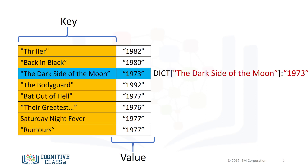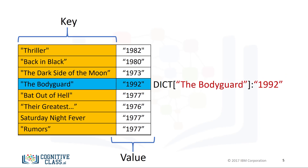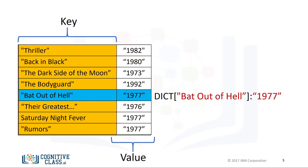The key 'The Dark Side of the Moon' gives us the value of 1973. Using the key 'The Bodyguard' gives us the value 1992, and so on.